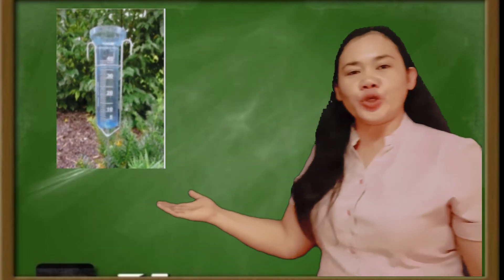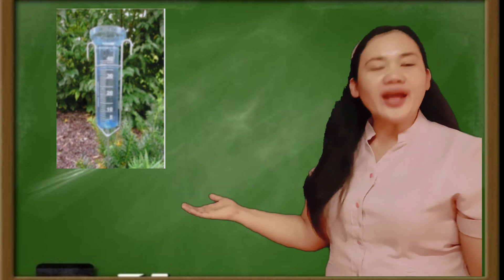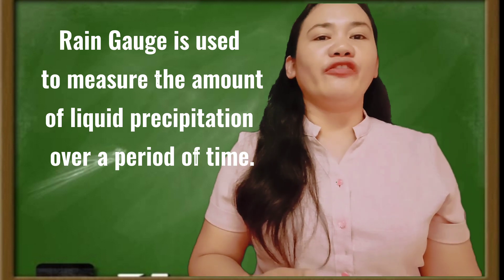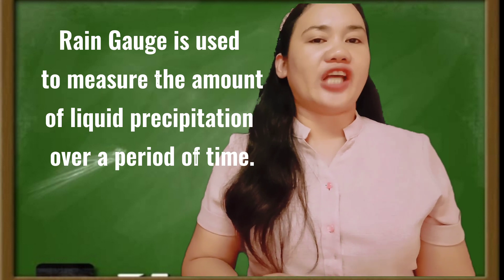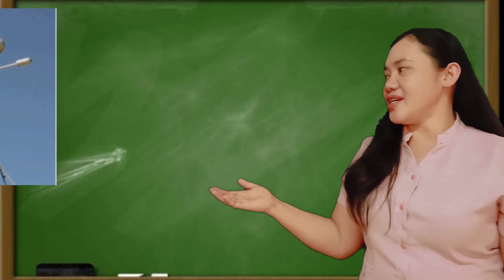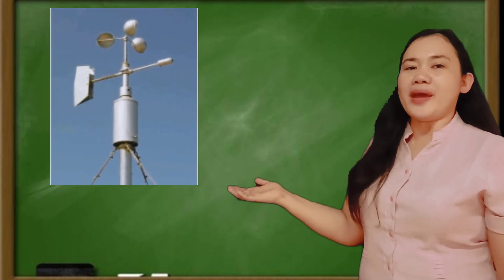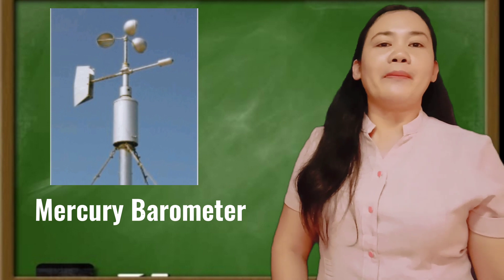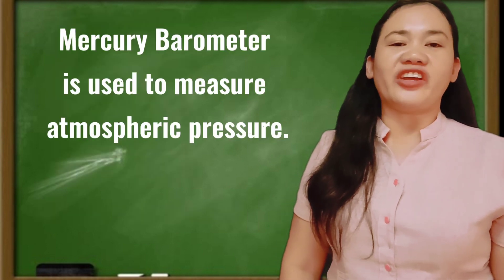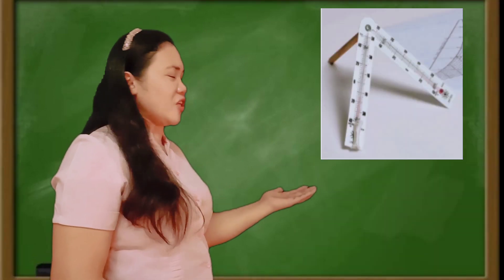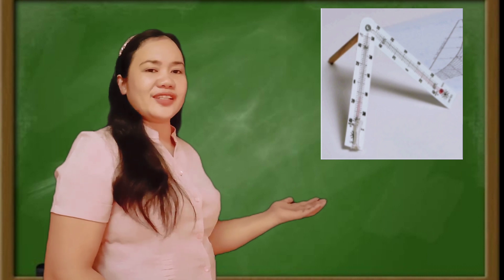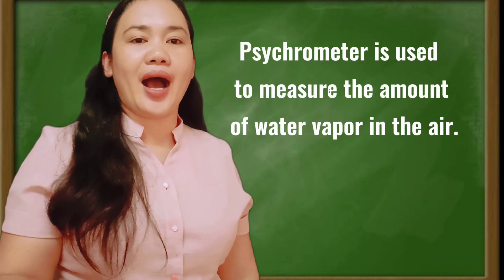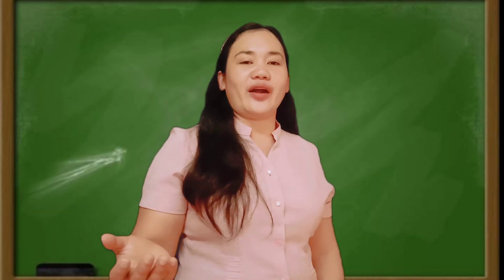How about the second picture? You are correct — that is a rain gauge. Rain gauge is used to measure the amount of liquid precipitation over a period of time. How about this? Do you know what weather instrument this is? You are correct — that is a barometer. It is used to measure atmospheric pressure. How about the last picture? What an awesome answer! A hygrometer is used to measure the amount of water vapor in the air. Your answers are all correct. Very good!